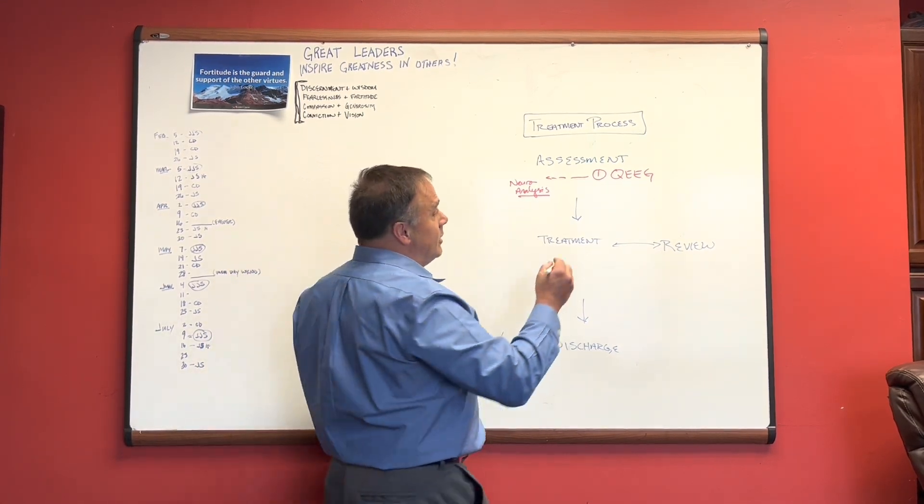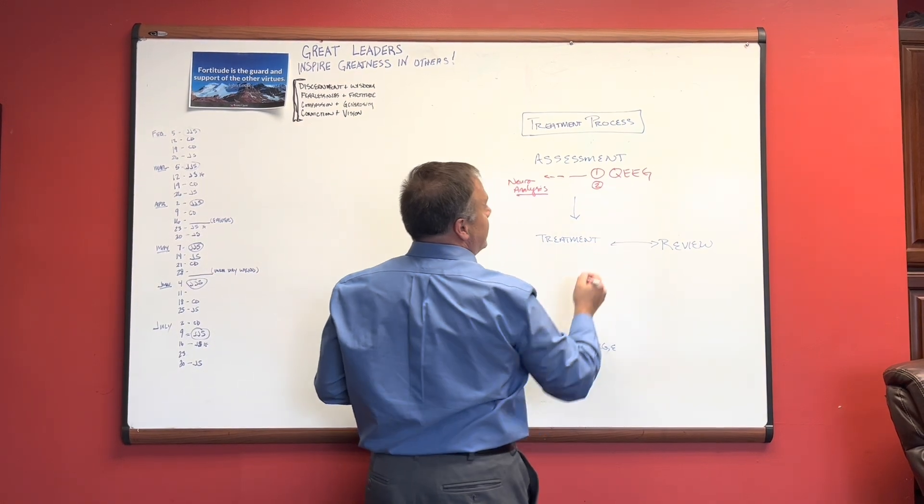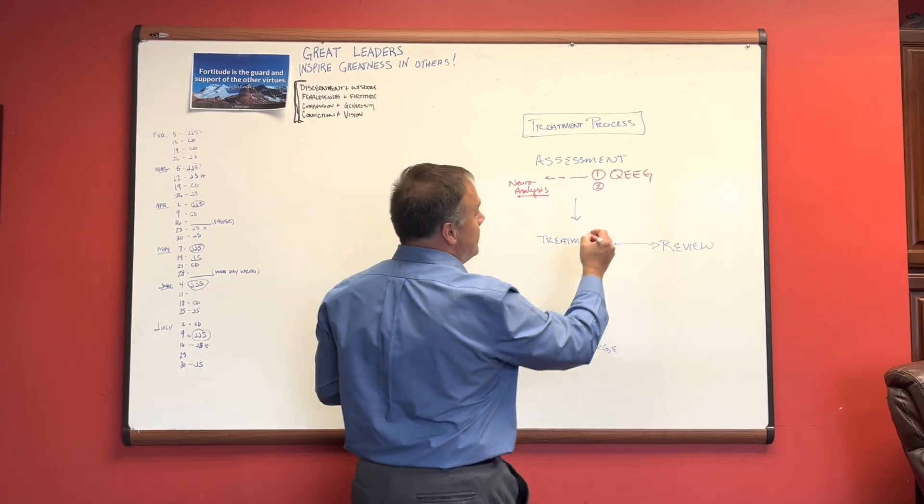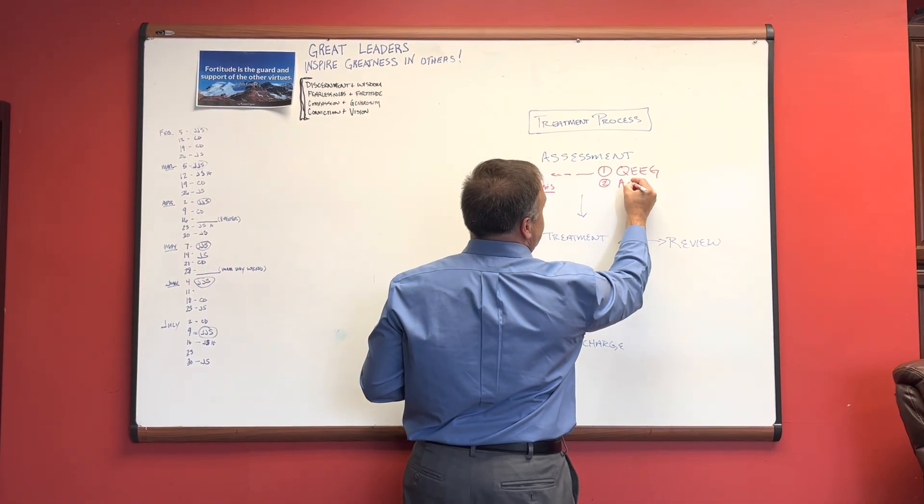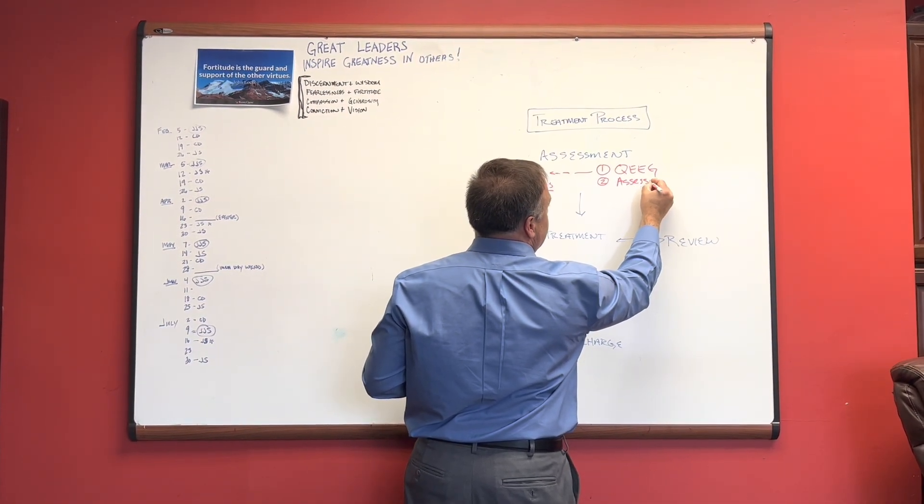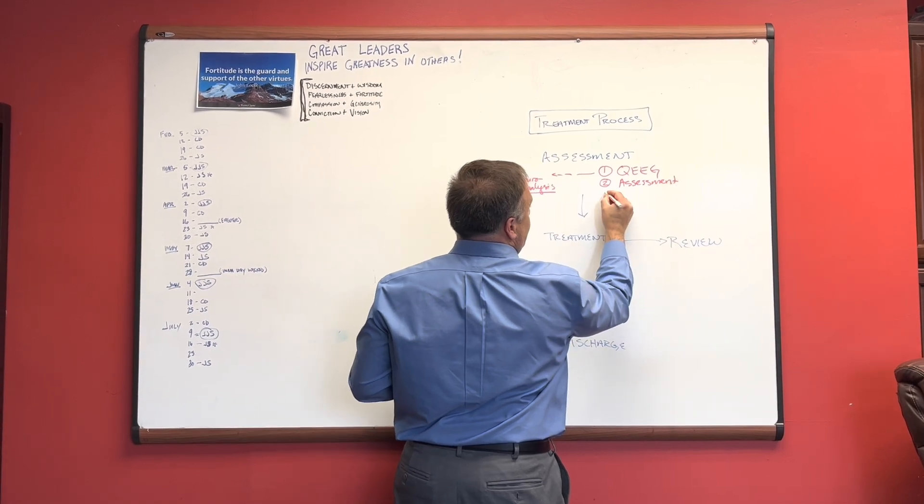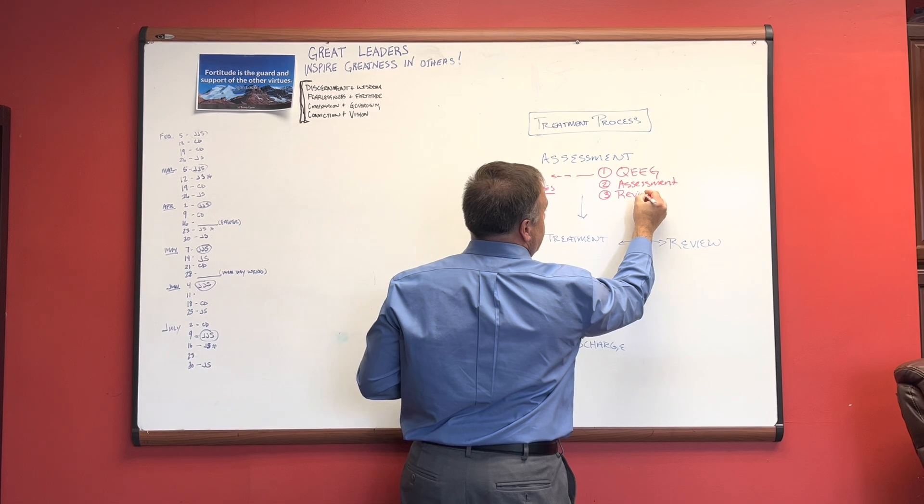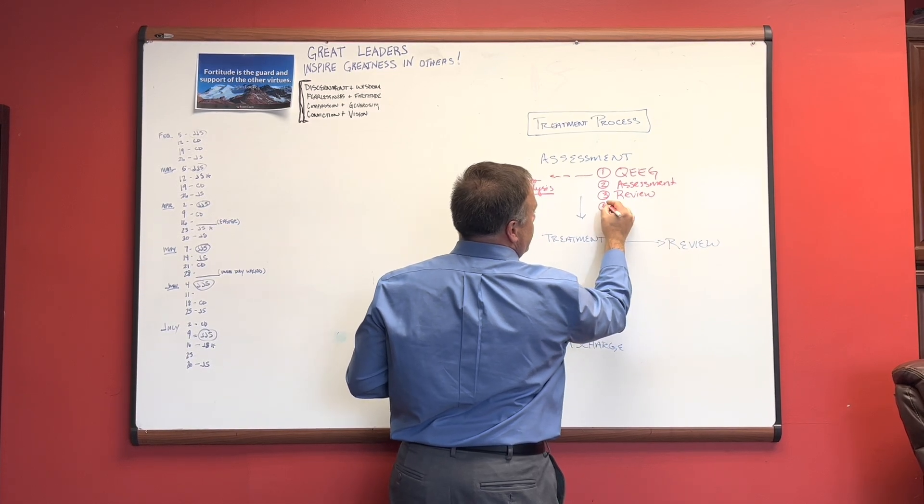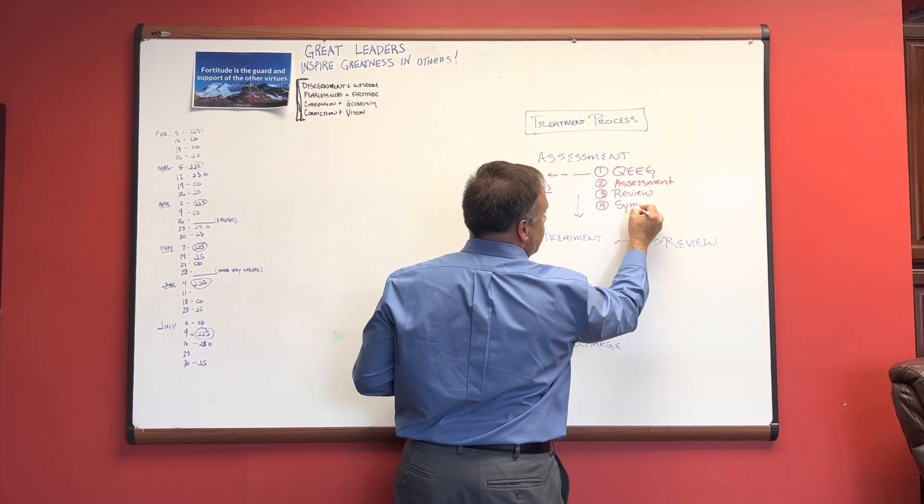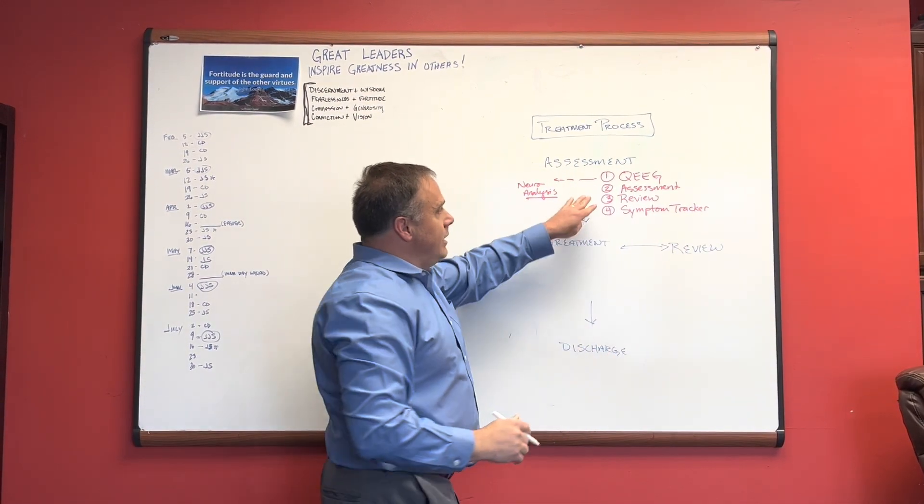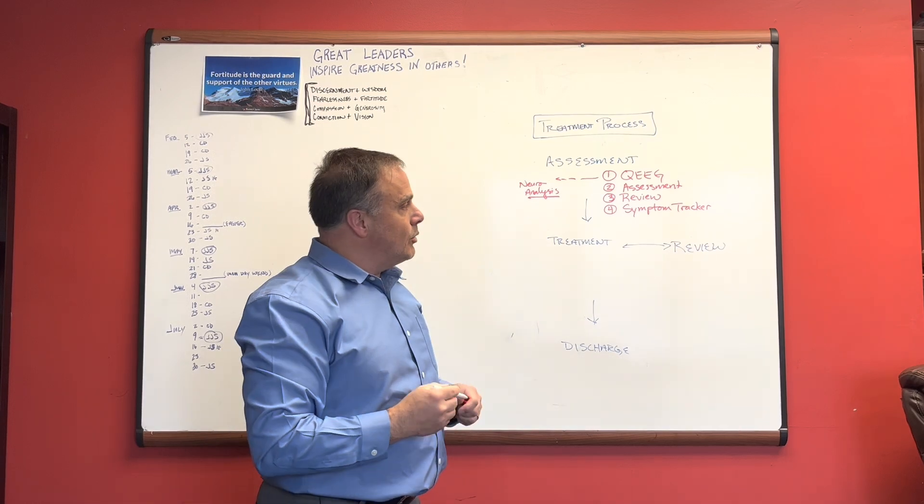Now in the meantime, we've got three other appointments. These other ones can be done online. QEEG is the only one that needs to be done in our office. There will be an assessment or an intake, there will be what we call a review, and there will be what we call a symptom tracker. Each one of these is going to be about one hour long.